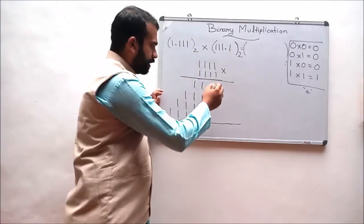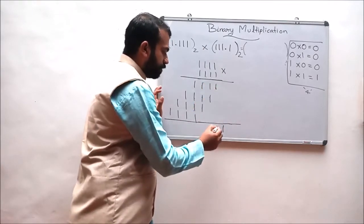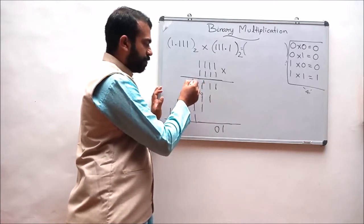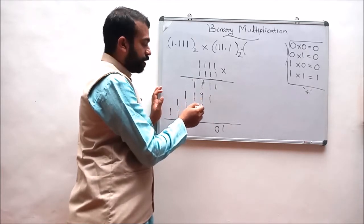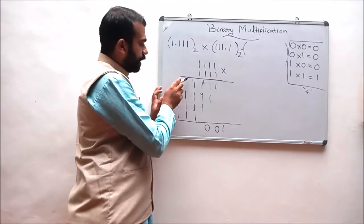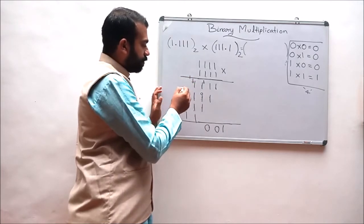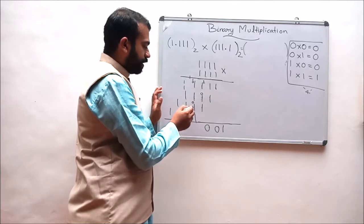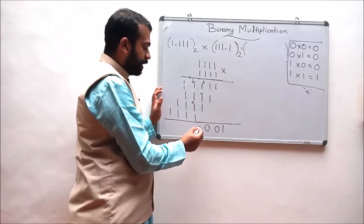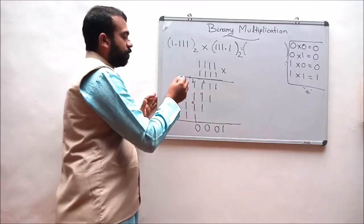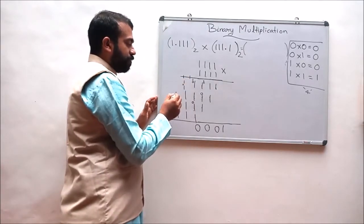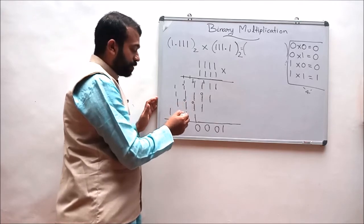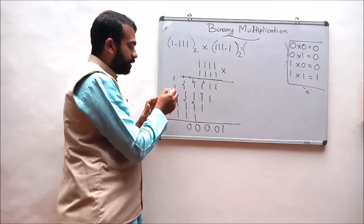In the binary addition step: 1 plus 0 results in 1. 1 plus 1 results in 0 with a carry of 1, and this 1 plus 1 results in 0 with a carry of 1. Again, 0 plus 1 is 1, and 1 plus 1 is 0 with a carry of 1. 1 plus 1 results in 0 with a carry of 1, and 0 plus 1 is 1. 1 plus 1 is 0 with a carry of 1. Again, 0 plus 1 is 1. 1 plus 1 is 0 with a carry of 1. 1 plus 1 results in 0 with a carry of 1. 0 plus 1 is 1. 1 plus 1 is 0 with a carry of 1.